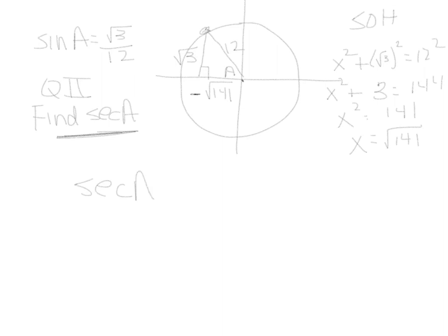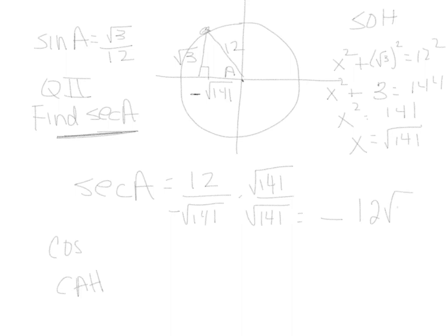Now that we have our three sides, we are ready to find our answer. We are looking for secant. Secant is the reciprocal of cosine. Cosine from SOHCAHTOA is C-A-H, so look at the triangle — the adjacent side is negative √141 and the hypotenuse is 12. Taking the reciprocal gives us 12 over negative √141. We need to rationalize, so multiply by √141, and since we have positive and negative that just gives us a negative: negative 12√141 over 141. That is our answer.